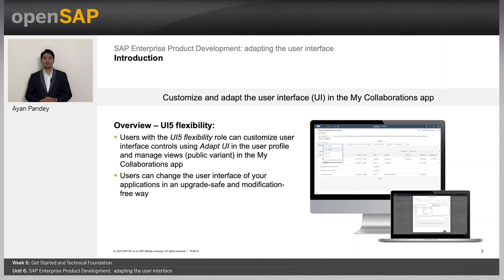In this unit, we will focus on the ways to adapt the user interface in SAP Enterprise Product Development. Let us see the overview of UI5 Flexibility in the MyCollaborations app. Users with the UI5 Flexibility role can customize user interface controls using AdaptUI in the user profile and manage views, also called public variants, in the MyCollaborations app.